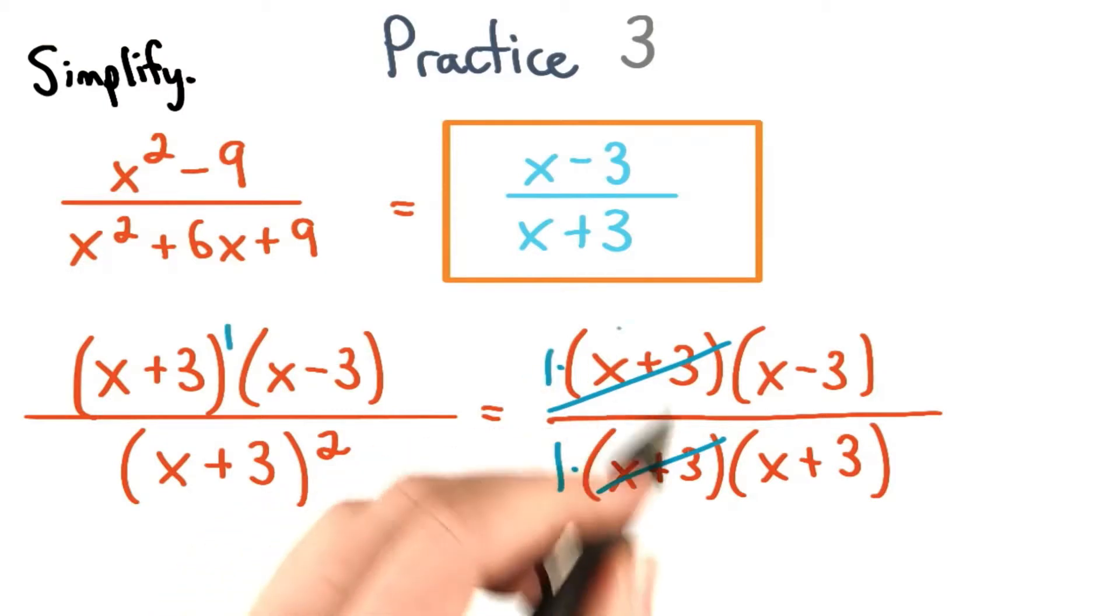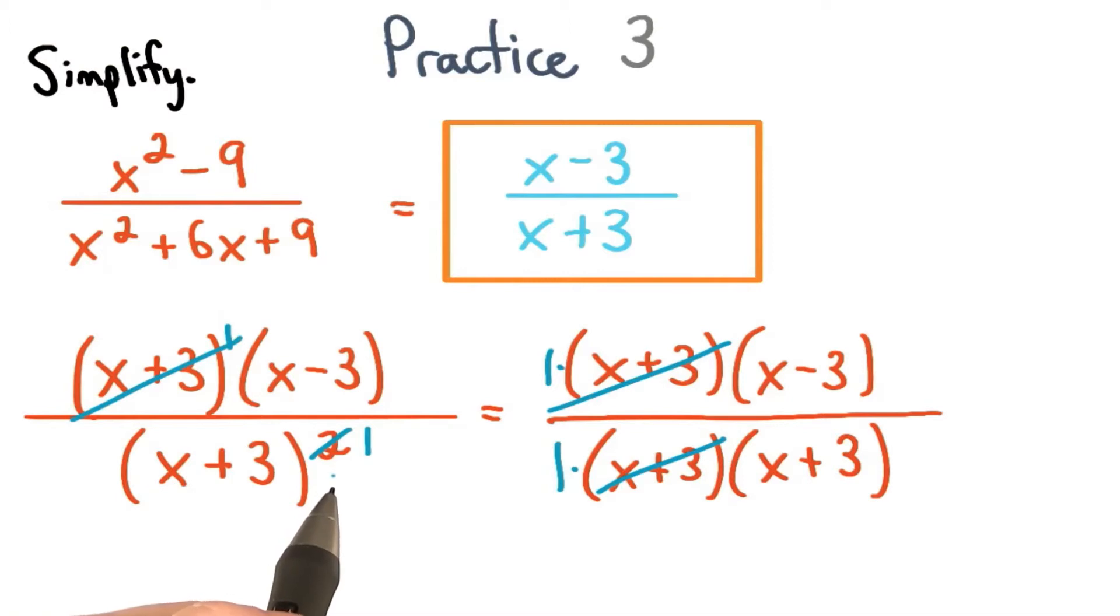Another way to think about simplifying this is to do it over here. We have an exponent of 1 for this x plus 3, and an exponent of 2 for this x plus 3. We use one of these x plus 3's to cancel with the one in the numerator. So our power of 2 drops down to our power of 1, and we lose this factor altogether.